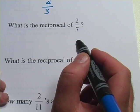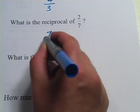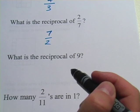Let's try another one. What is the reciprocal of 2 sevenths? Well, instead of the 2 on the top and the 7 on the bottom, it's the 7 on the top, 2 on the bottom. So it's 7 halves.